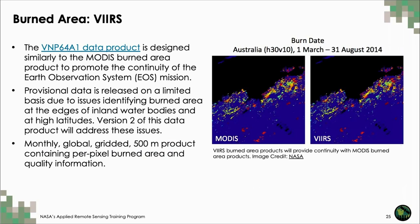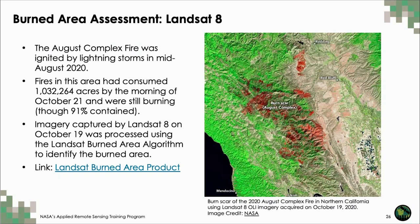I also want to mention the VIIRS burned area product. This data is provisional and should be used with caution due to issues identifying burned area at the edges of inland water bodies and at high latitudes. The second version of this product will deal with these issues, with the goal of ensuring continuity of a 500-meter burned area product in the event that the Aqua and Terra MODIS sensors are decommissioned. Another burned area product is the Landsat burned area product, which leverages the Landsat series to provide pre-processed burned area estimates at 30-meter spatial resolution for the United States.